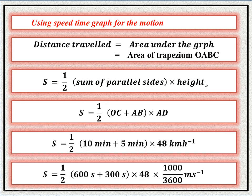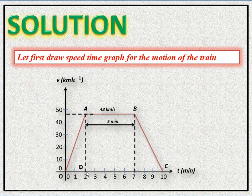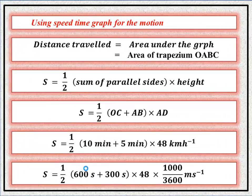So S equals one-half into (OC + AB) into AD. Side OC is 10 minutes, side AB is 5 minutes, and height AD is 48 km/h. Substituting: S = (1/2) × (10 min + 5 min) × 48 km/h.